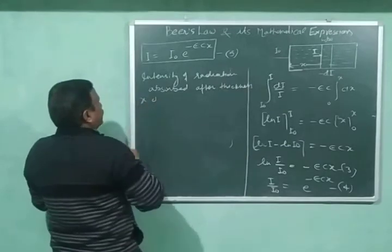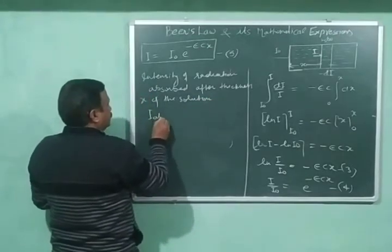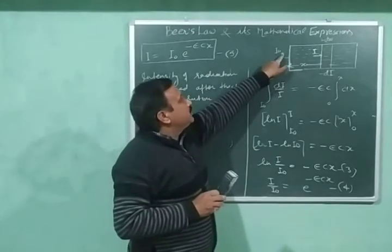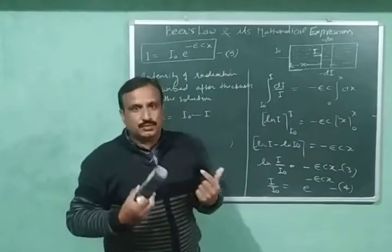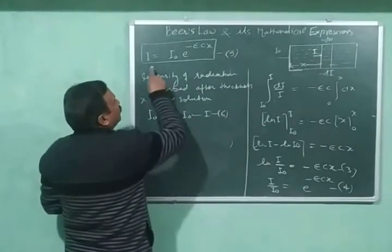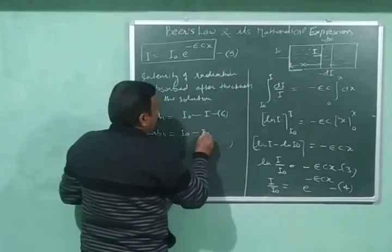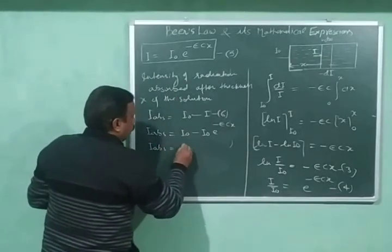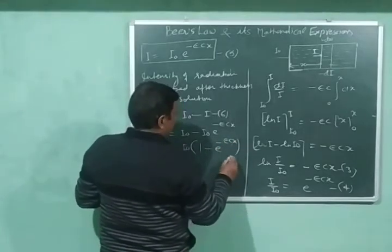The intensity of radiations absorbed after thickness x of the solution — I_absorbed — equals I₀ − I, because I₀ is the incident intensity and I is the intensity remaining after distance x. Substituting the value of I from equation 5: I_absorbed = I₀ − I₀·e^(−εCx) = I₀(1 − e^(−εCx)). This is equation number 7.